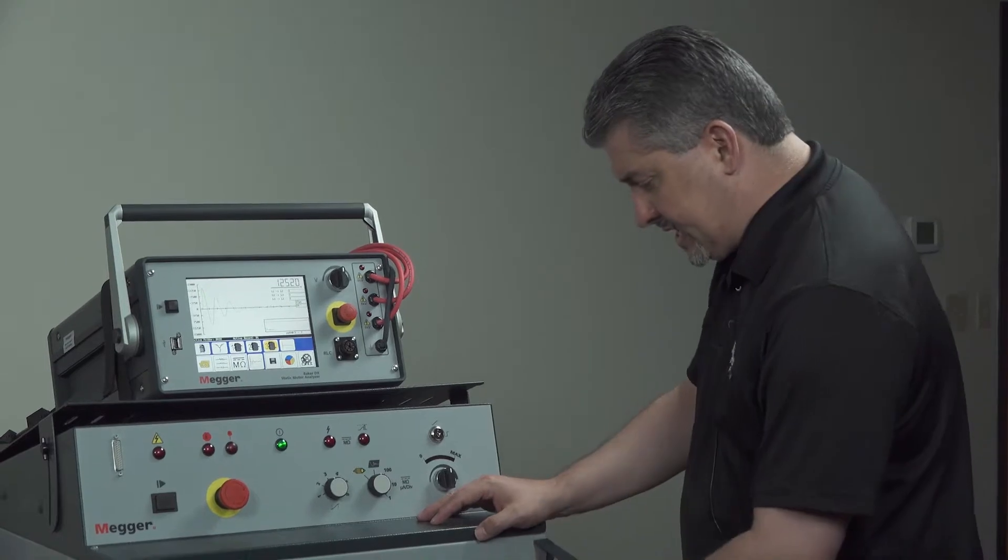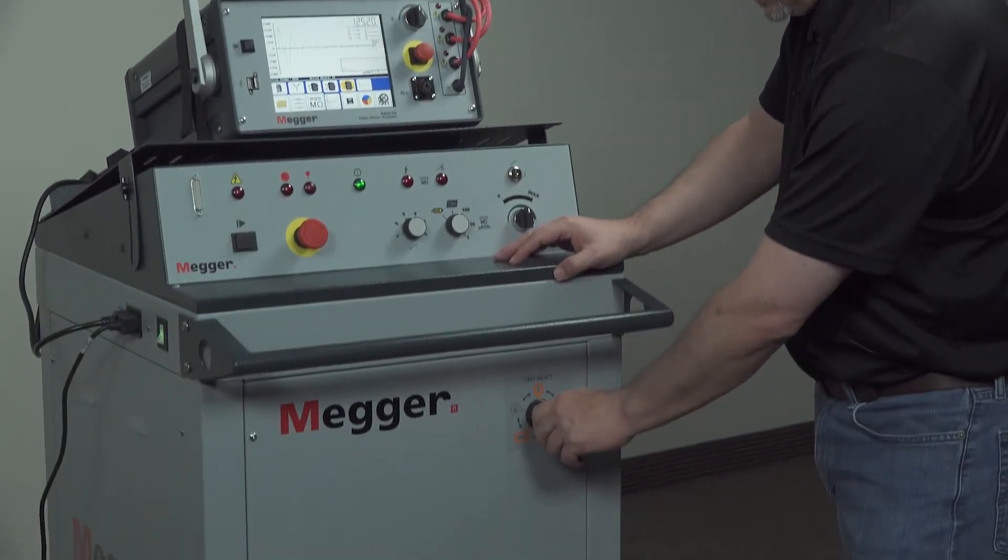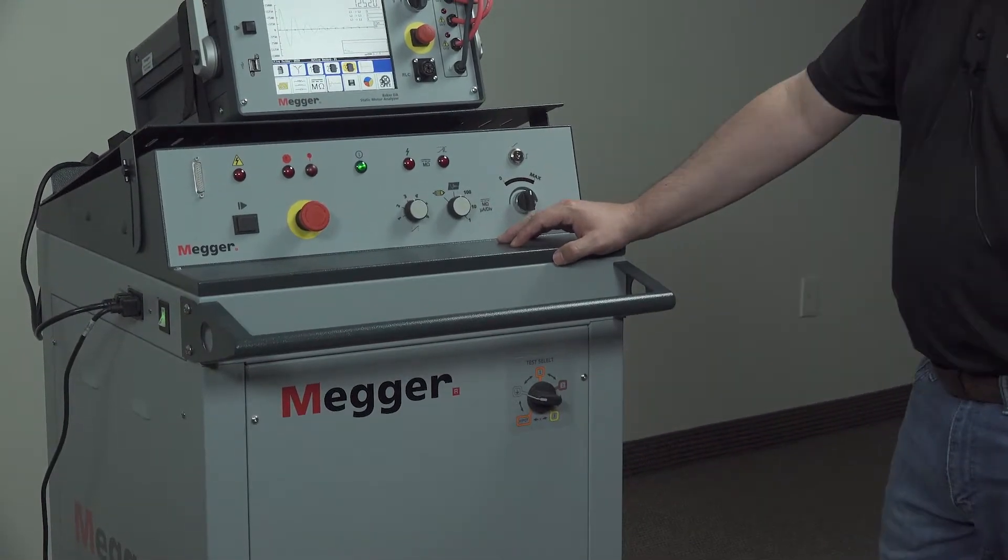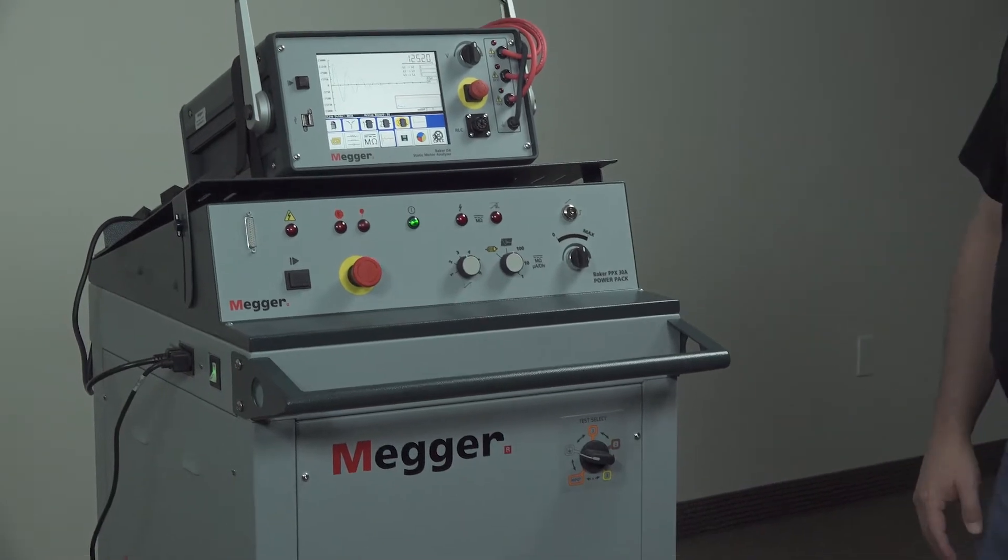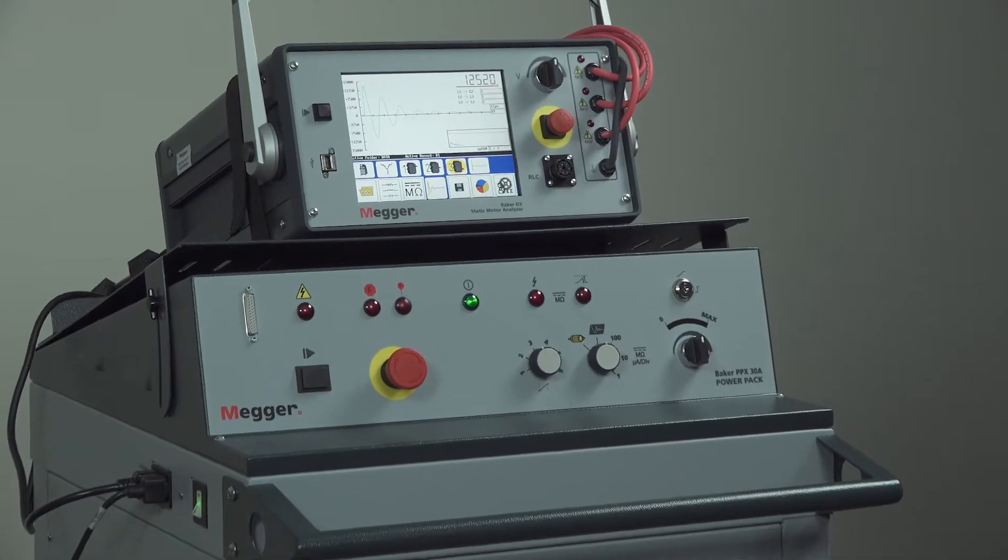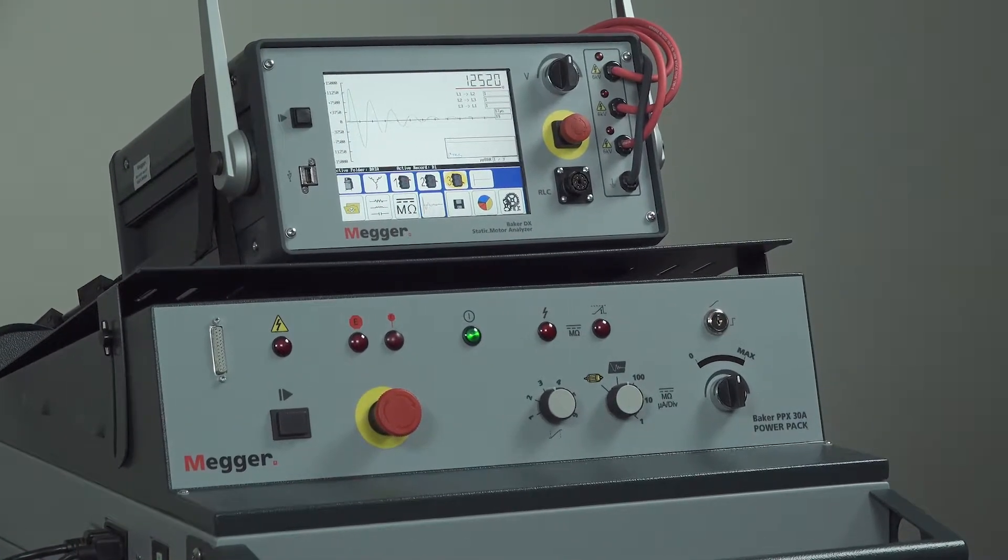Now the testing is complete. We've saved the data. We want to make sure we take that test lead selector switch to the lead's ground position to ensure that any charge that might still be present in the winding has a path to discharge to ground.